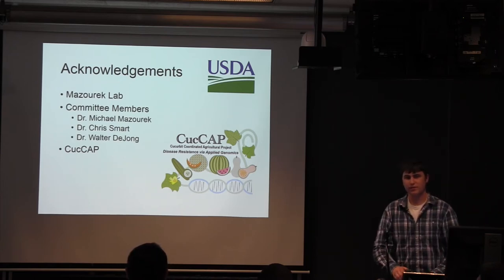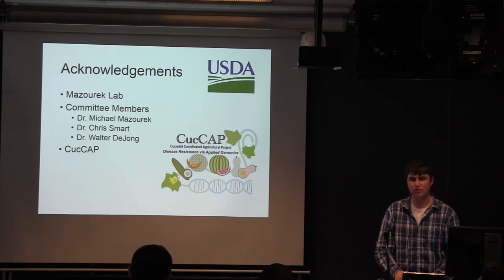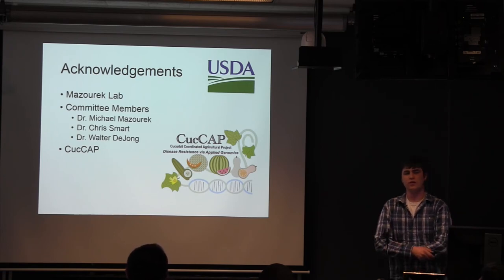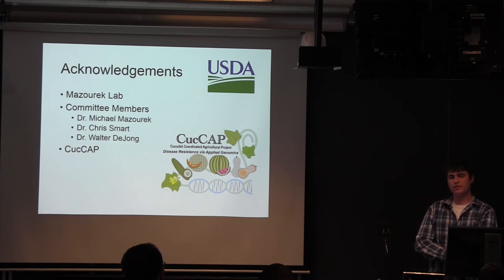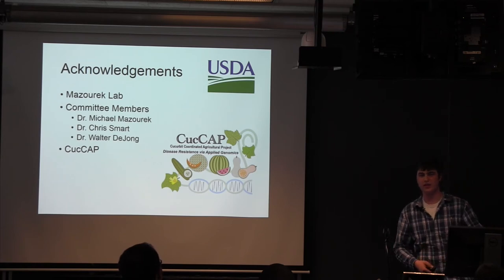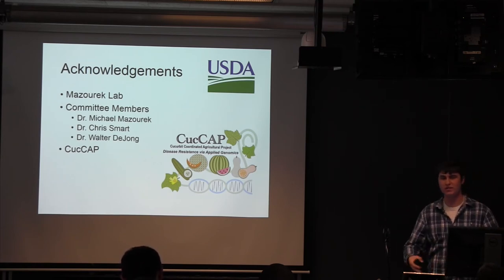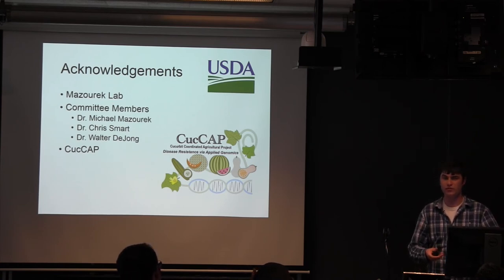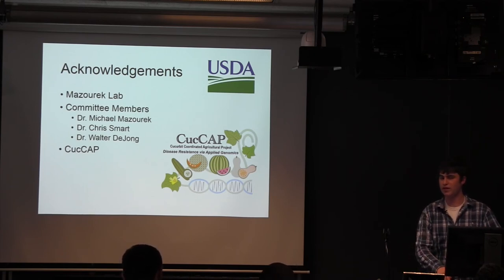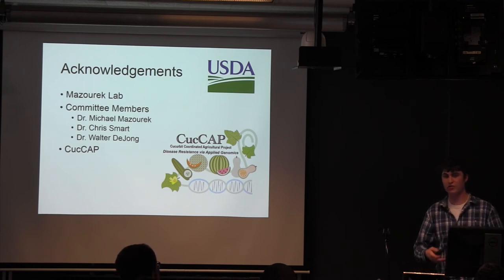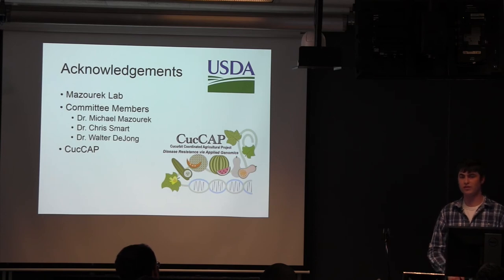Question: What kind of virus would you use for the gene silencing? There isn't a lot of work done in cucurbits yet using that. One that has been shown to work at least as a proof of concept is apple latent spherical virus. Not a lot of work has been done using VIGS in cucurbits, so we'd have to get the system working first and then go from there.